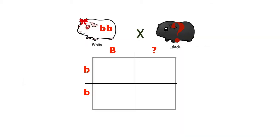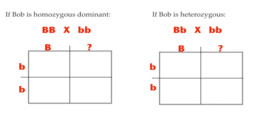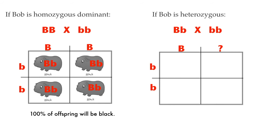Now that you have bought the perfect guinea pig for the test cross, you bring Bob — let's call her Sarah — back to your home. You place both guinea pigs in the same cage, turn down the lights, give them some privacy, and let nature take its course. In the meantime, you prepare a Punnett square so you can make an accurate conclusion about Bob's genotype once the babies are born. During a test cross, if the organism with the dominant phenotype — in this case Bob — is homozygous, then all of the offspring will get a dominant allele from that parent and will show the dominant phenotype, so all the offspring would have black fur.